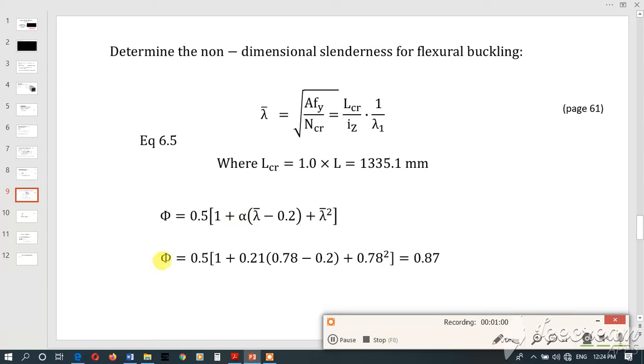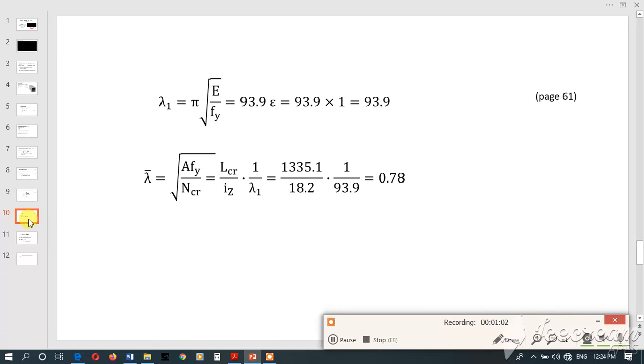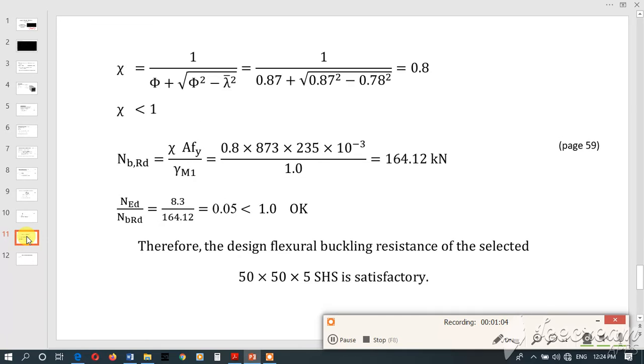We know lambda bar, we know alpha, we calculated this. Then finally we came to this relationship. We know this one and we know lambda bar, then we calculated this, and it should be less than 1.